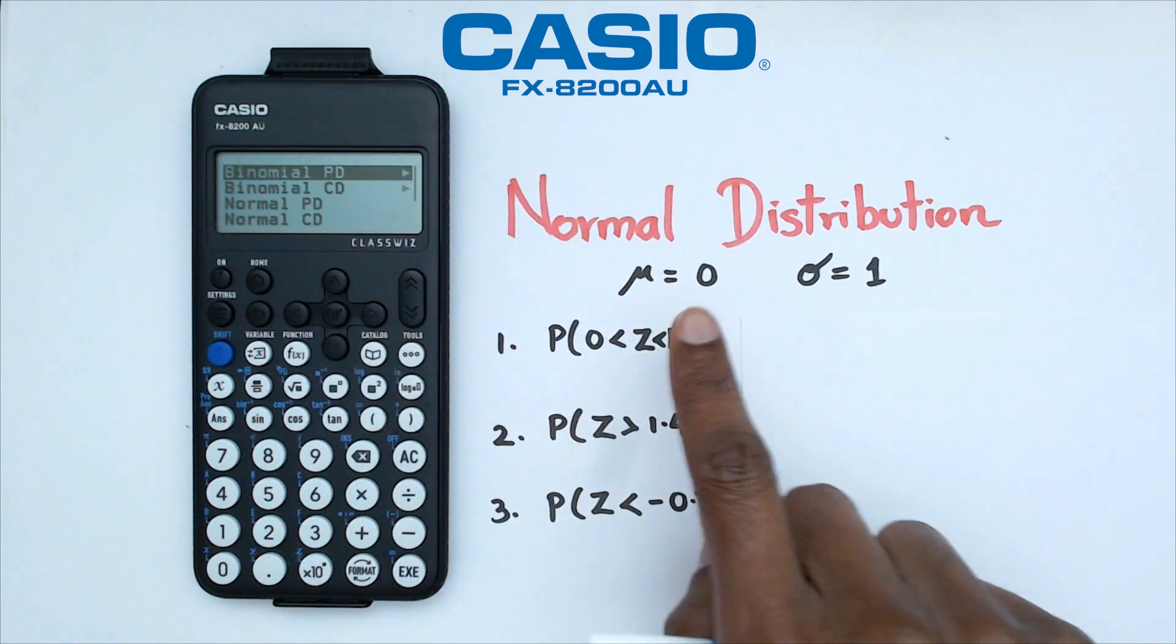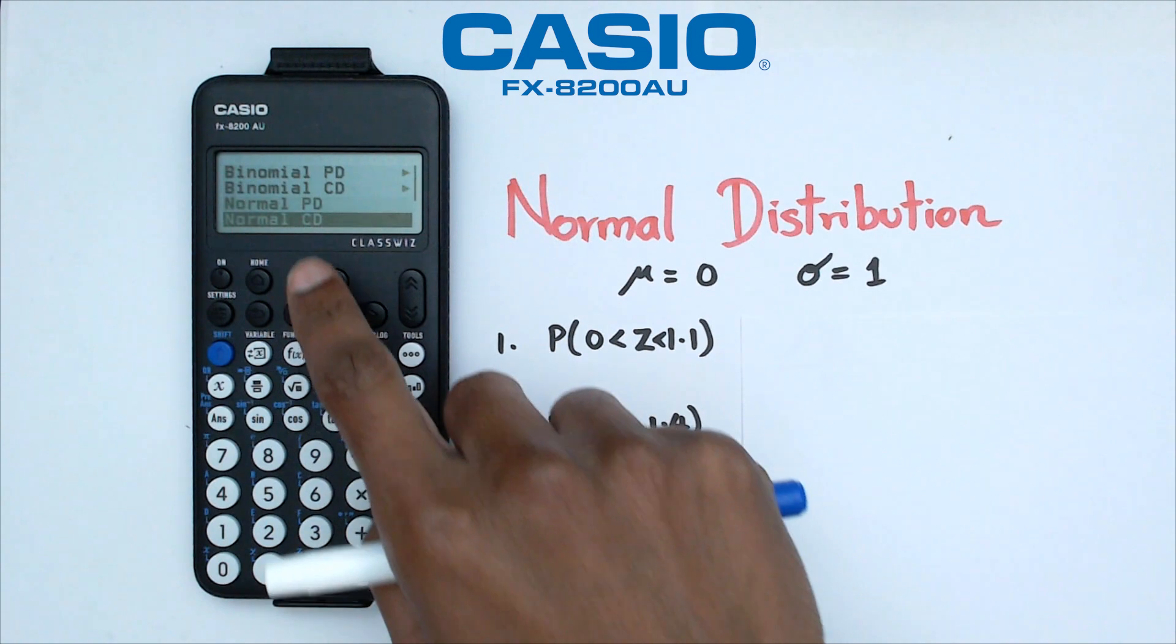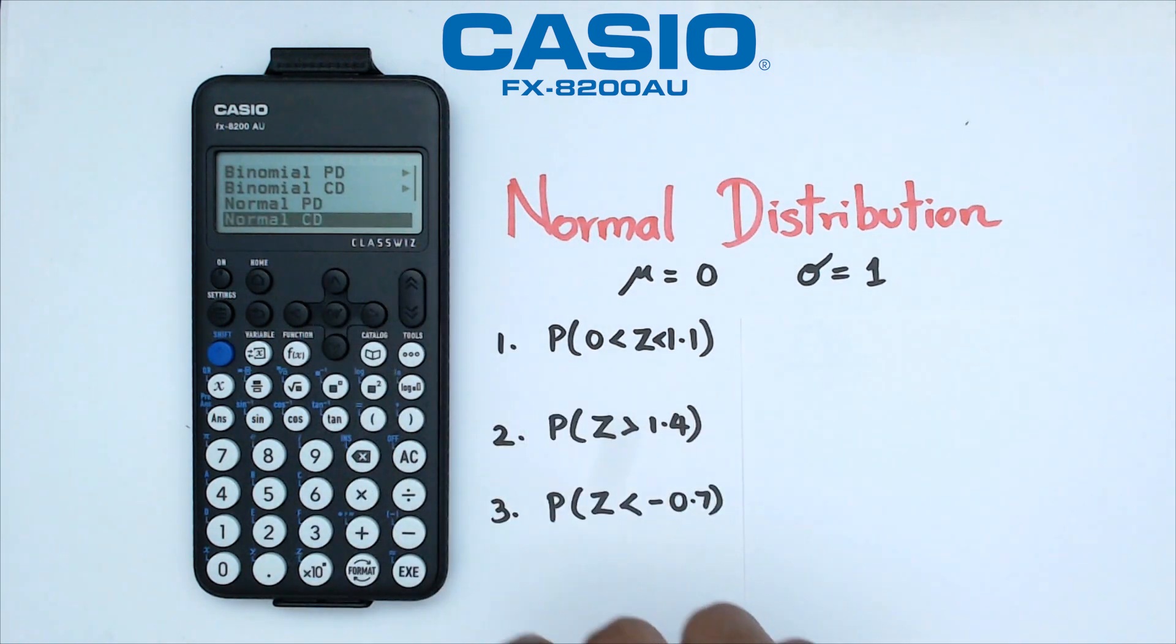Now we're going to do normal distribution. So we're going to go down to normal CD, which is the cumulative distribution that we want. We're going to press equals.